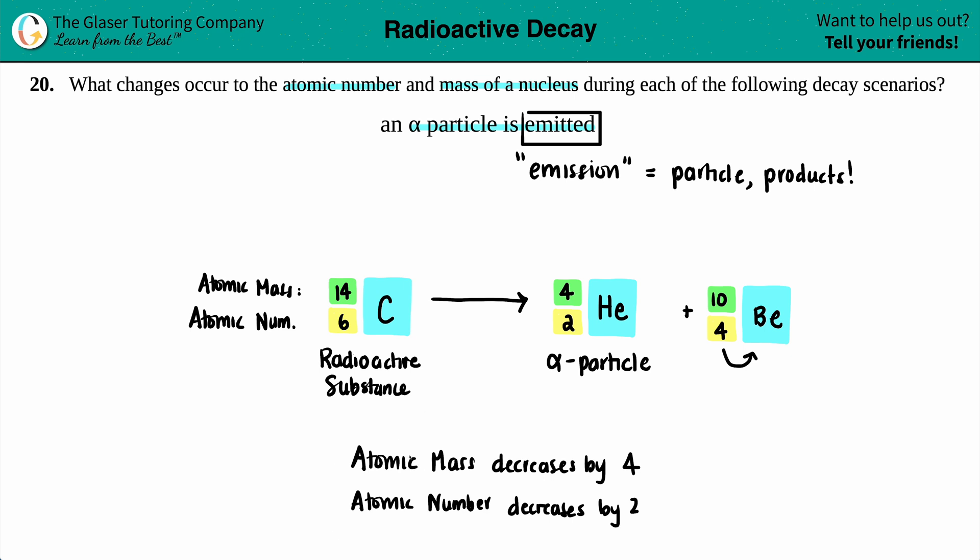But this is your final answer. So if you are emitting an alpha particle, your mass will drop by four and your atomic number will drop by two because that's the numbers that are part of the alpha particle. And that's it. What do you think? I hope this helped. Let me know in the comments.